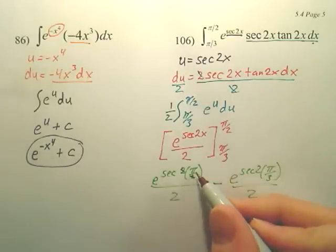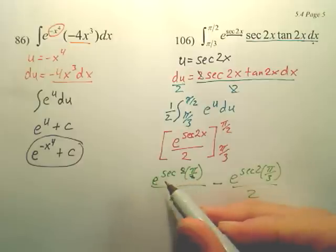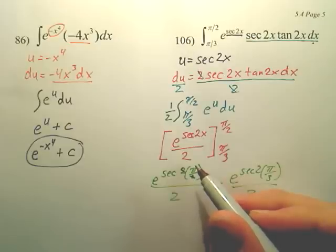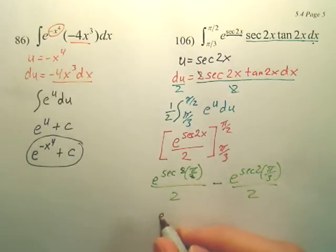This ends up being, these cancel. This means secant pi. Secant is cosine, 1 over cosine. Cosine pi is negative 1. So this ends up being e to the negative first over 2.